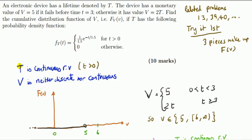There are two random variables here: T, which is a continuous random variable, and V, which is neither discrete nor continuous. V equals 5 if T is less than 3 (and since time is not negative, T ≥ 0), otherwise V equals 2T for T ≥ 3. When T equals 3, V equals 6. There's a gap between 5 and 6, so V takes the value 5 or anything greater than or equal to 6.